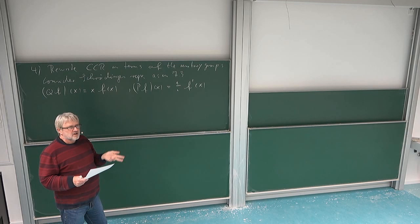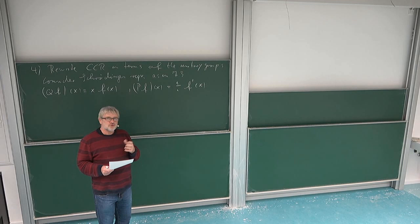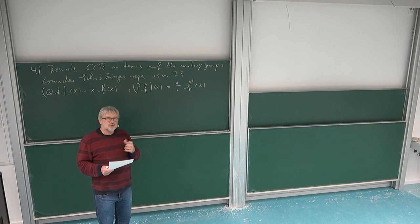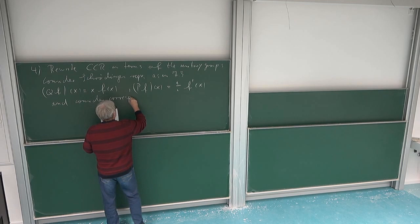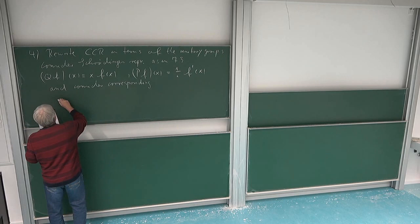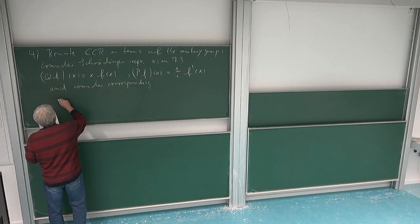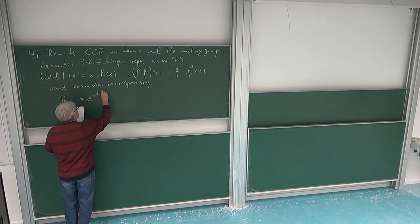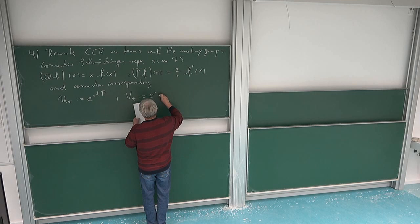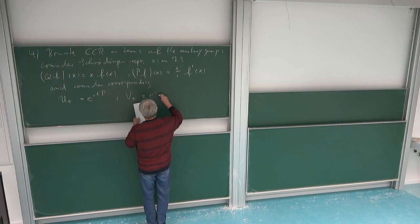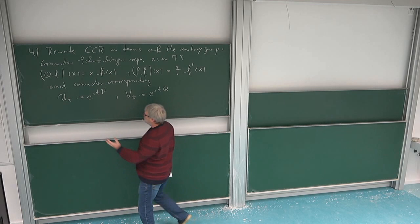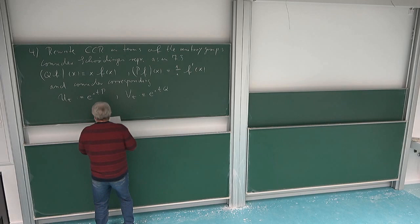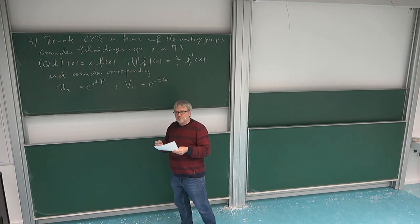We can take the exponentials of P and Q, and each generates a strongly continuous unitary group. We consider the corresponding unitary groups: for P, we call it U_t, so for each t this is e^{iTP}; and for Q we call it V_s, so for each s this is e^{isQ}. We know that U_t contains all the information about P, and V_s contains all the information about Q — one can go in both directions between the group and its generator.